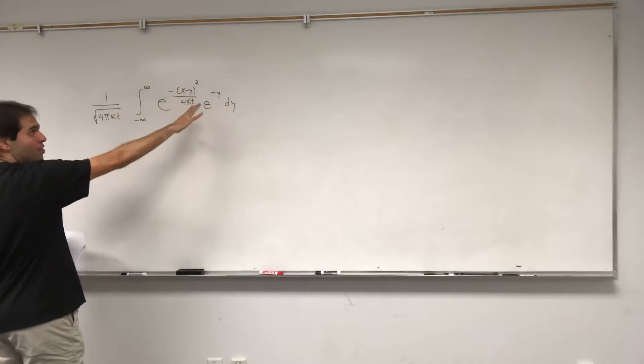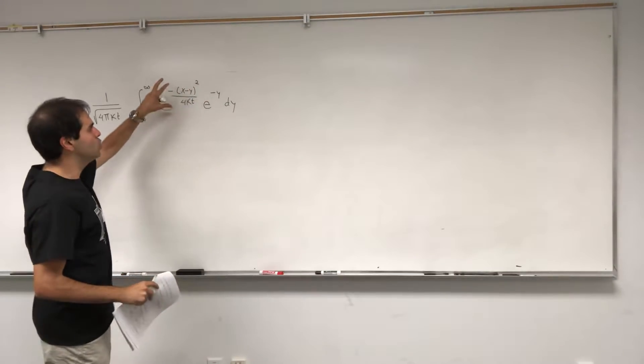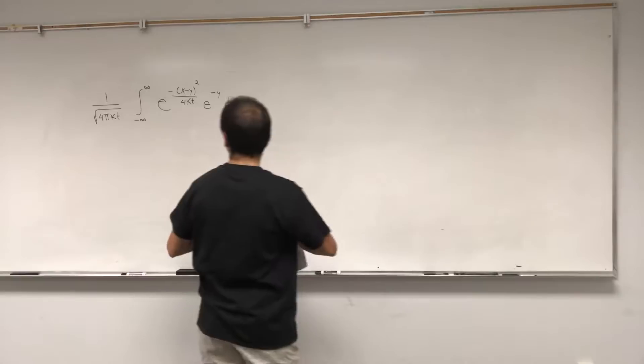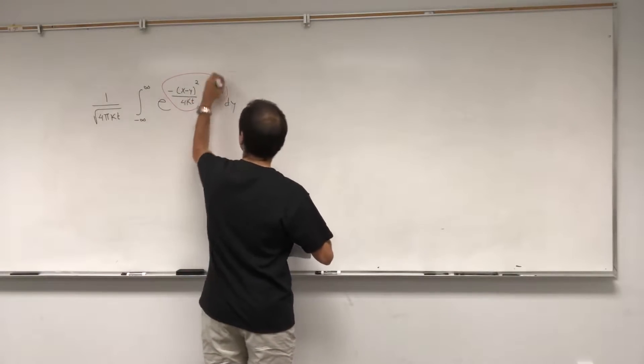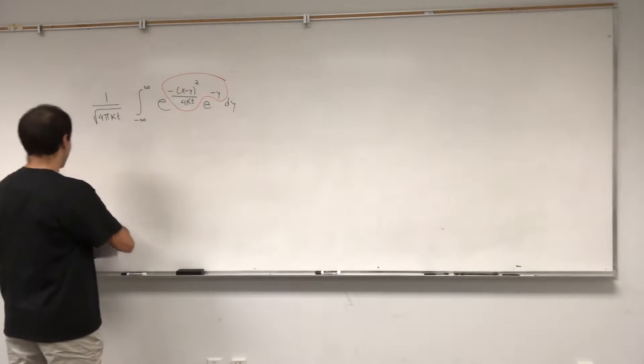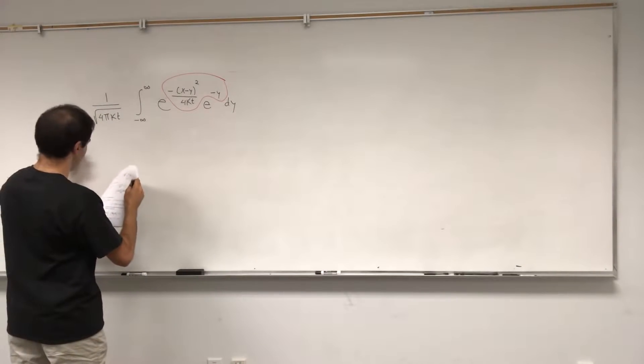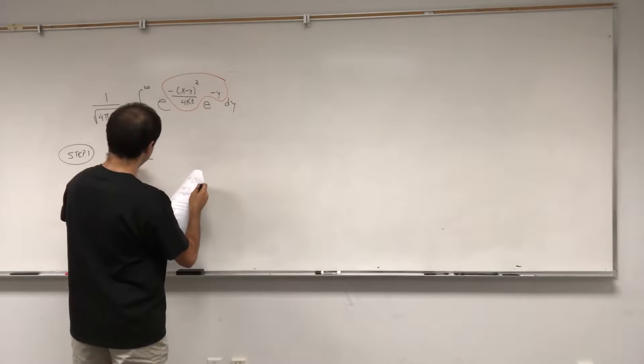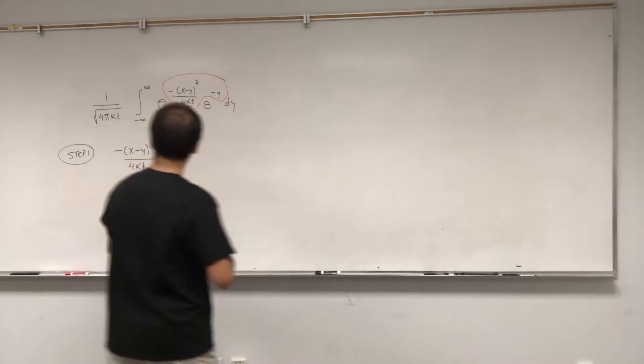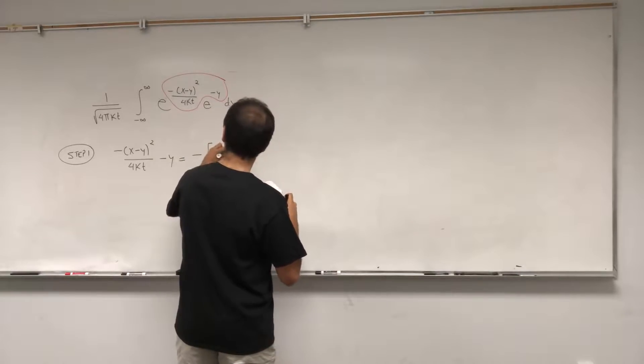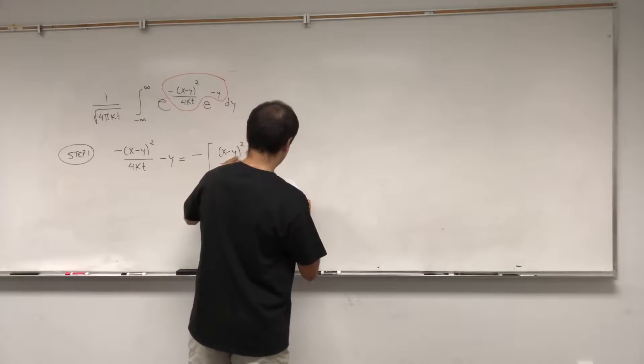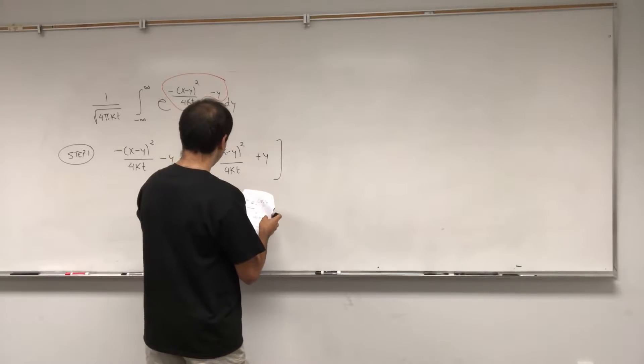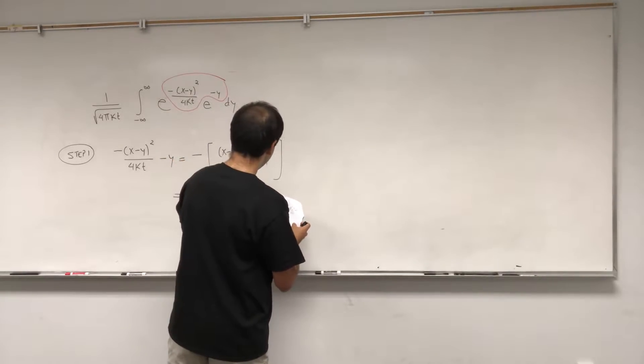We want to solve this integral and essentially all we need to do is to sort of complete the square in the exponents. So let's first focus on this exponent here: minus x minus y squared over 4kt minus y. Step one, I can complete the square here. Minus x minus y squared over 4kt minus y, that's the same thing as minus x minus y squared over 4kt plus y.